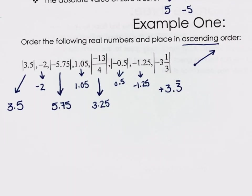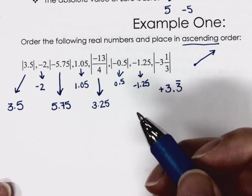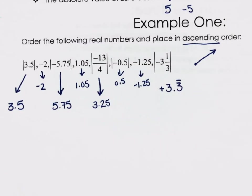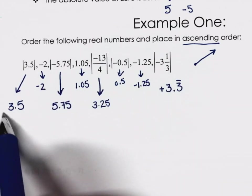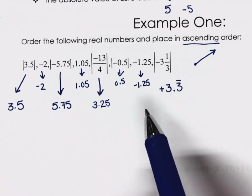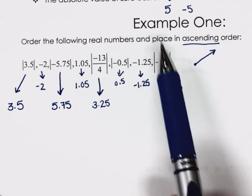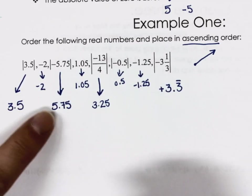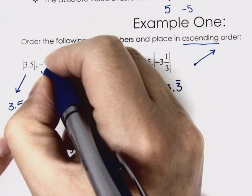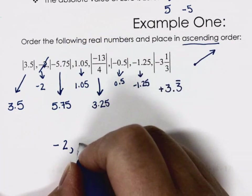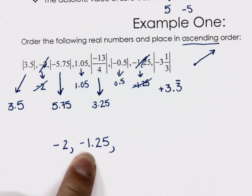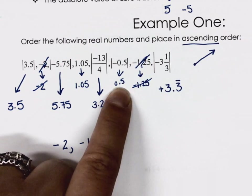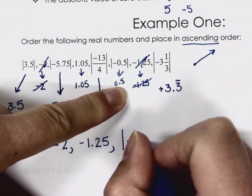Ascending order means we start from the smallest and get bigger. When putting them back in order, we have to use their original format — you'll be deducted half a mark if you use the evaluated format. I'll start in ascending order: negative two comes first, then negative 1.25 is next. Then 0.5 is next, but I have to write it inside absolute value brackets.